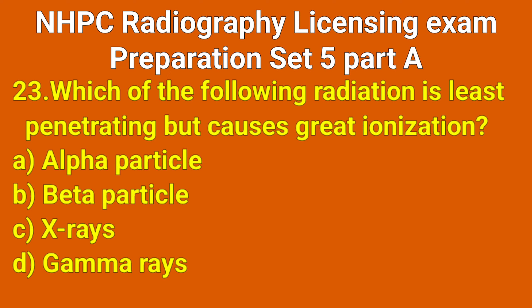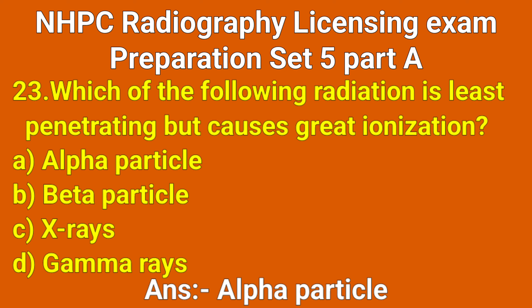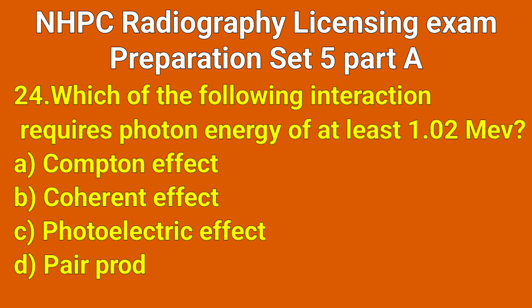Question number 23: Which of the following radiation is less penetrating but causes greater ionization? Correct answer: option A, alpha particle.